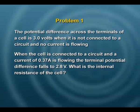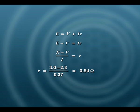Looking at our equation: E equals V plus Ir. So E minus V equals Ir, or r equals (E minus V) divided by I. From the values given, r equals (3 minus 2.8) divided by 0.37, and if we calculate that it comes out to be 0.54 ohms. So 0.54 ohms is the internal resistance for which these specifications were given.